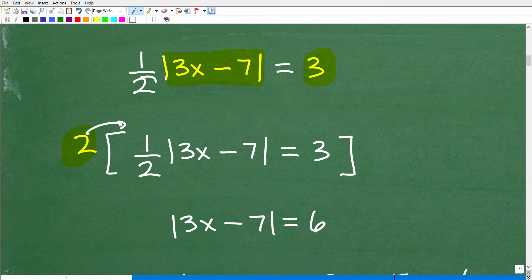Now, why 2? Well, 2 is the LCD. So when I multiply this 2 times this, I'm going to get 2 times one-half is 1.